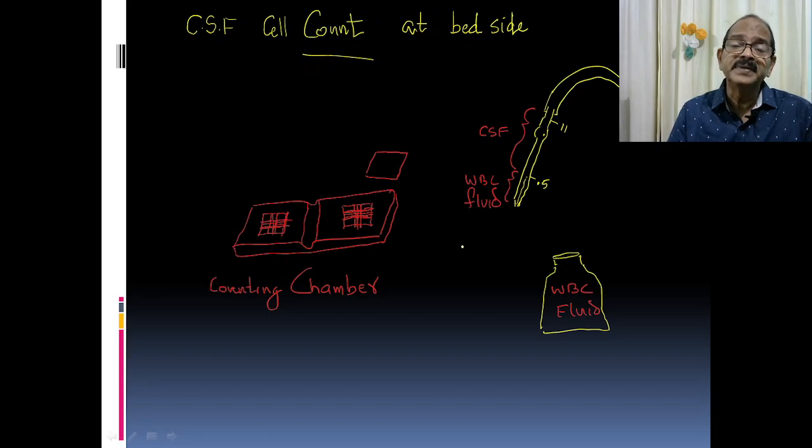The materials we need are familiar to us. This is the counting chamber used for RBC and WBC counting. This is the WBC paper, and this is the WBC fluid. When we take WBC counting, we take blood up to 0.5 and then add the WBC fluid.